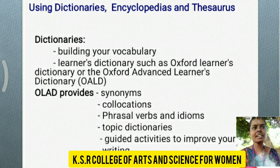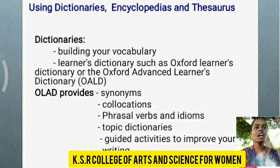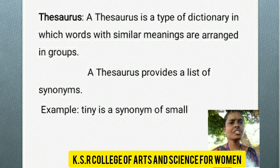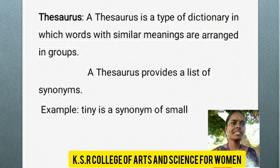Using dictionaries, encyclopedias, and thesauruses. Dictionaries help build your vocabulary — learners can learn new vocabularies in their own languages. OLED provides synonyms, collocations, phrasal verbs, and idioms. Topic dictionaries offer guided activities to improve your writing. A thesaurus is a type of dictionary in which words with similar meanings are arranged in groups — for example, tiny is a synonym of small.